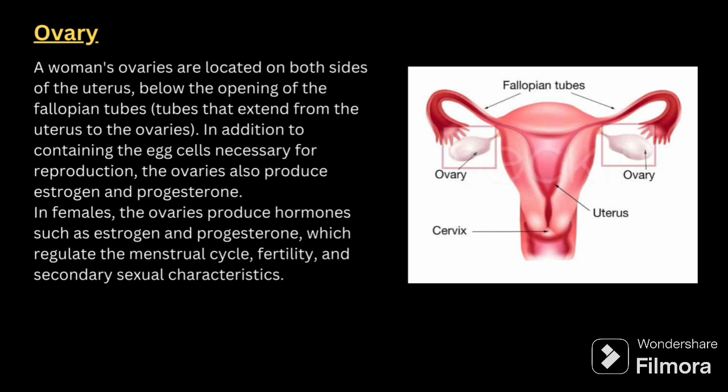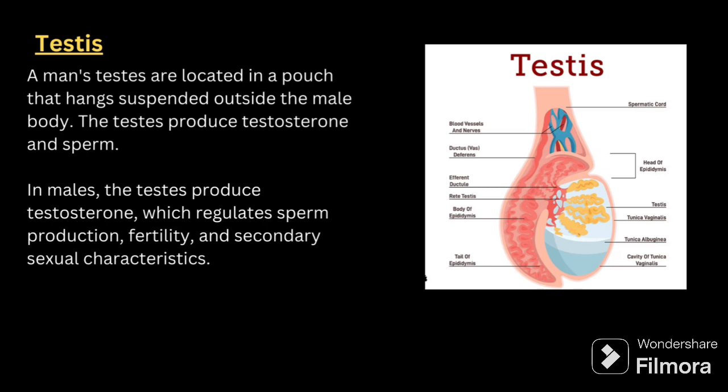Finally, we will be talking about the testes. A man's testes are located in a pouch that hangs suspended outside the male body. The testes produce testosterone and sperm. In males, the testes produce testosterone which regulates sperm production, fertility and secondary sexual characteristics. That covers all the parts of the endocrine system, starting from the hypothalamus and ending with the testes.